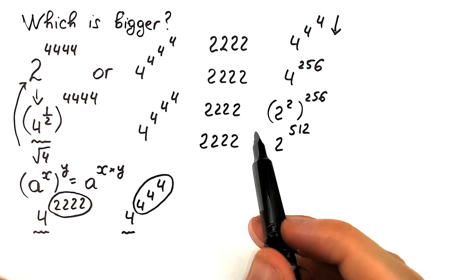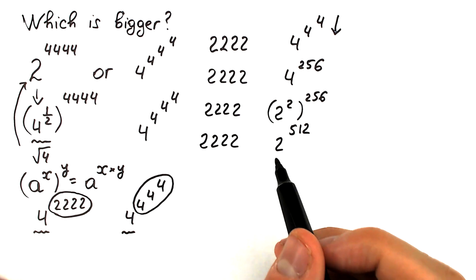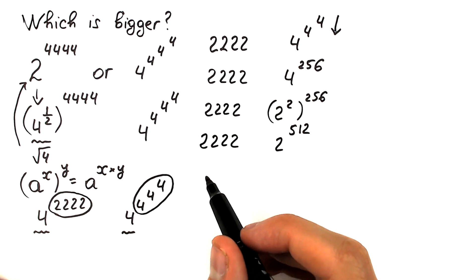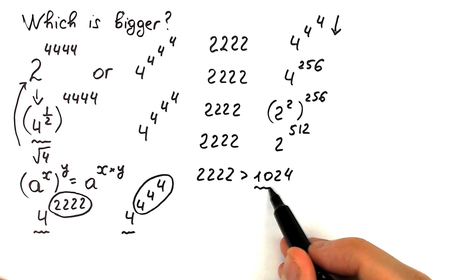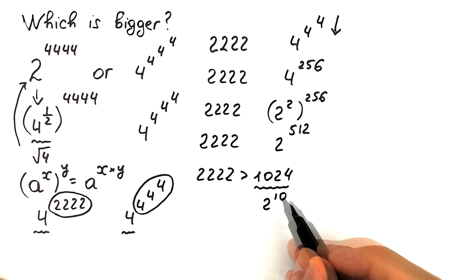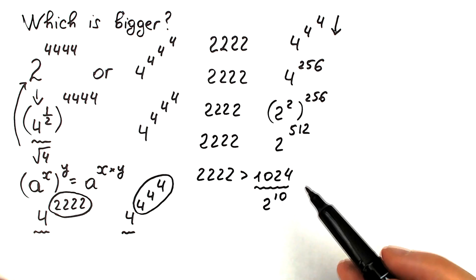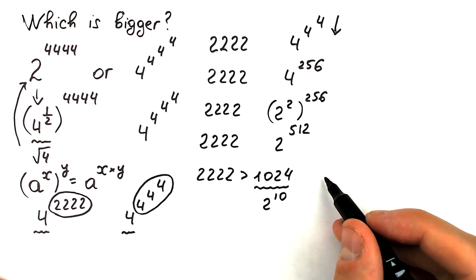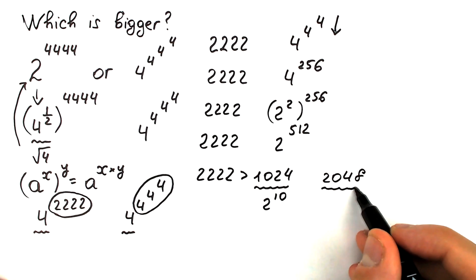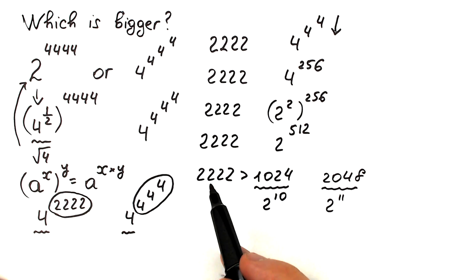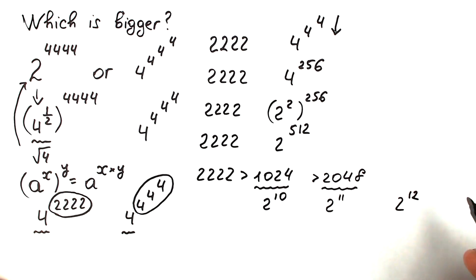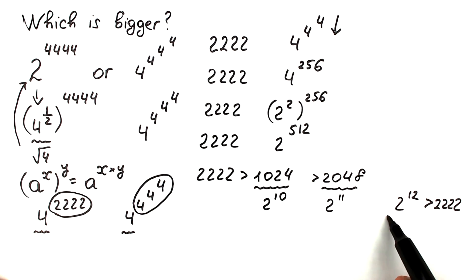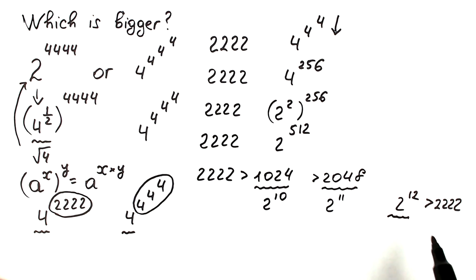I hope some of you already sense that the right-hand side is bigger. We know 1024 = 2^10, and 2222 is obviously greater than 1024. Multiplying by 2: 2048 = 2^11, still less than 2222. Multiplying once more: 2^12 = 4096, which is absolutely bigger than 2222. Therefore, 2^512 is 100% bigger than 2222, meaning 2^2222 is less than 2^512.